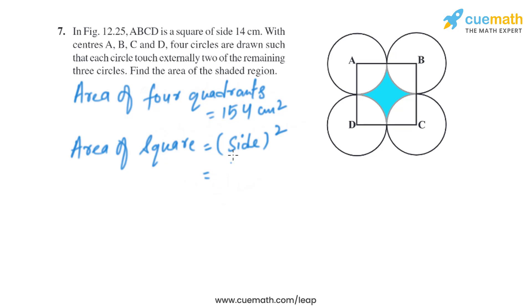Now let's find the area of the square, which is side². We know the side is 14 centimeters, so it will be 14² = 14 × 14 = 196 square centimeters.